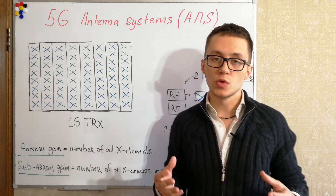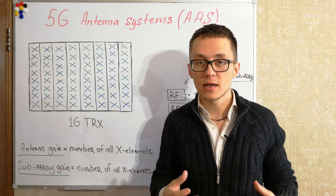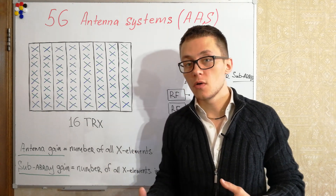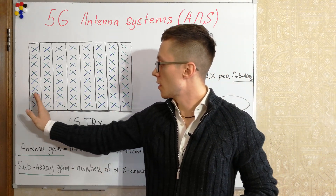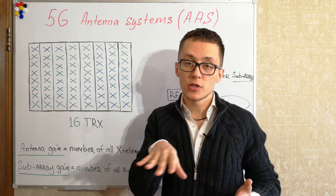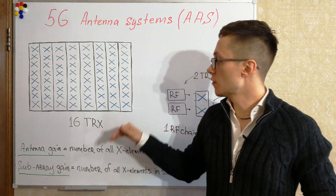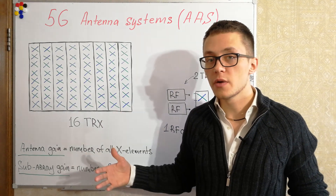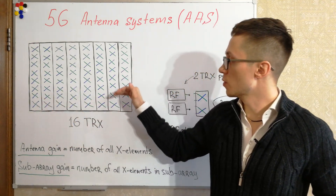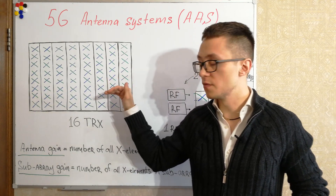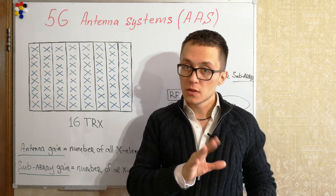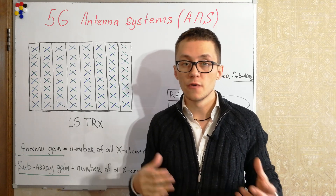It's very important to know and understand what exactly you need for your network. For example, for rural areas you probably only need to deploy an antenna system with horizontal sub-arrays, because you only need beam steering ability in the horizontal direction. For dense urban or urban environments, you probably need sub-arrays with not only horizontal but also vertically divided elements in order to steer beams in the vertical direction as well and serve users in vertical planes.